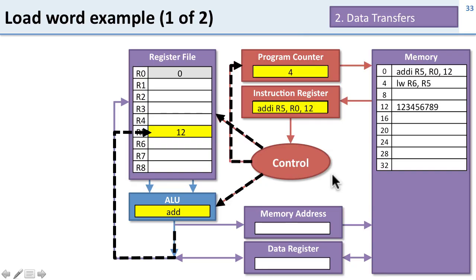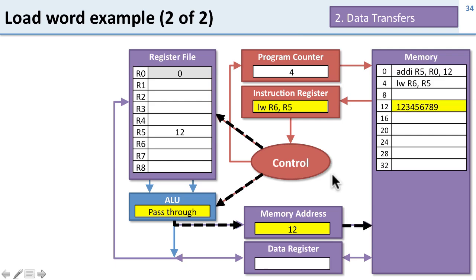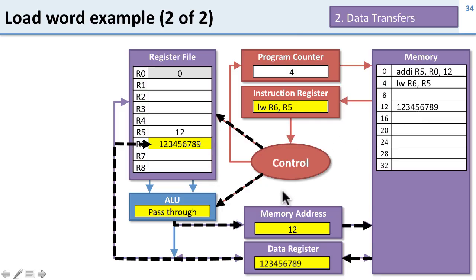Now we go on to the next instruction, instruction 4, which is the load word instruction. We load the instruction, and control is going to tell the ALU to just pass the address through. The address comes from register 5, so we pass the value 12 through into the memory address register. Then we go to the memory and tell it to read the data at address 12. When we read that data it goes back into the data register, and then we write it back into the register file — so now we've loaded the data that was at address 12 from memory into the register file.